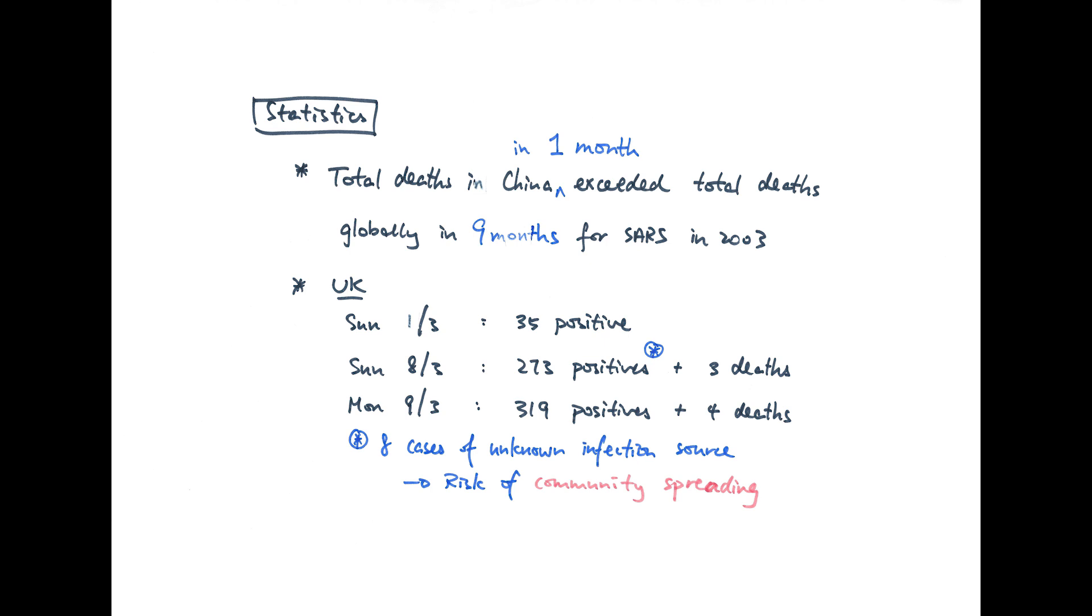In other words, COVID-19 killed more people in one month in one single country compared to SARS globally in 9 months. Now, let's look at the numbers in the UK.